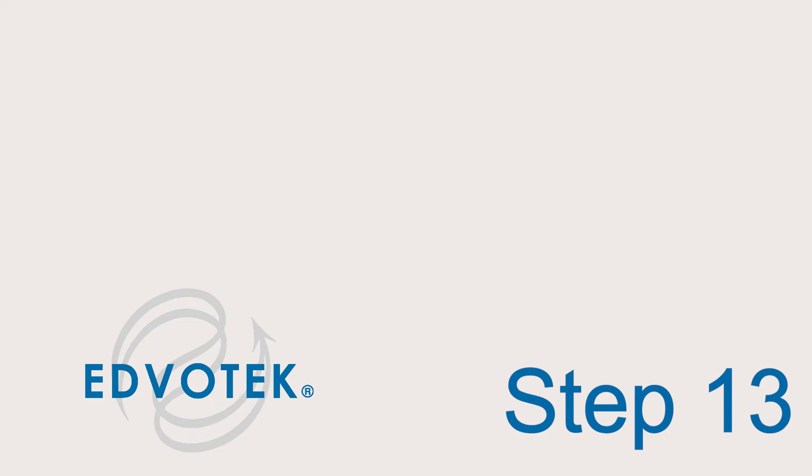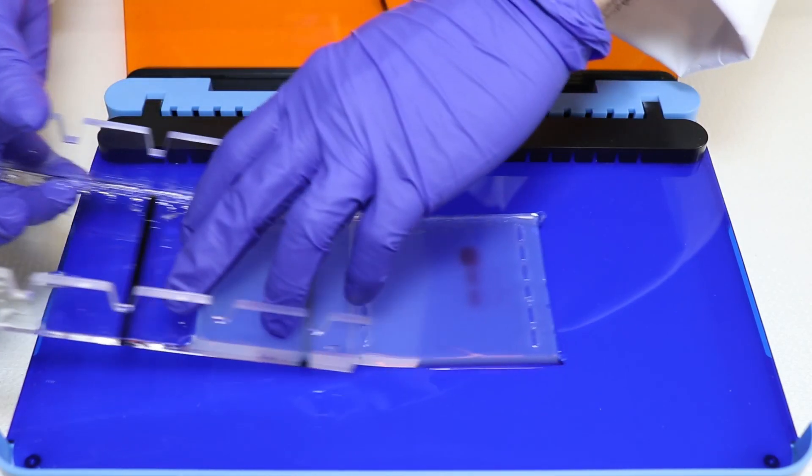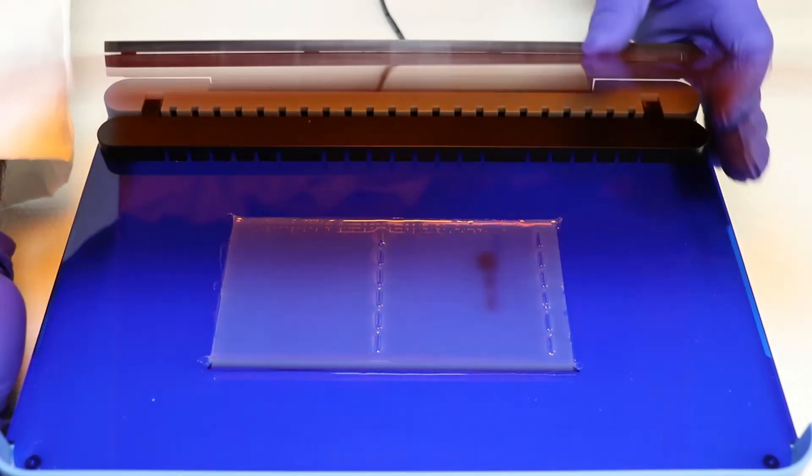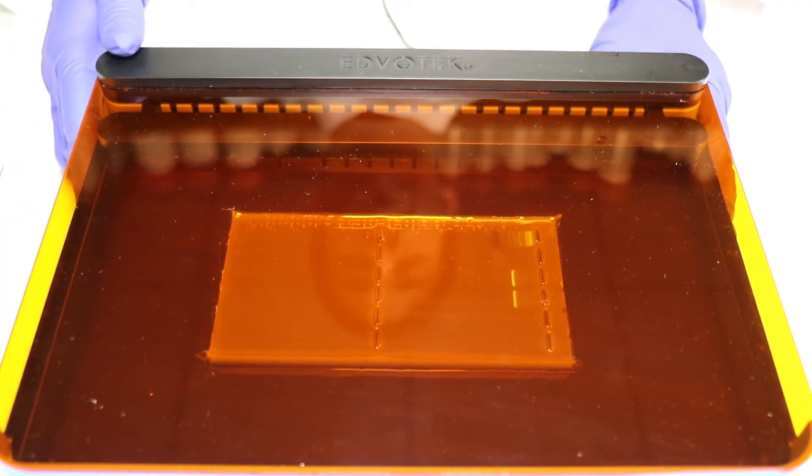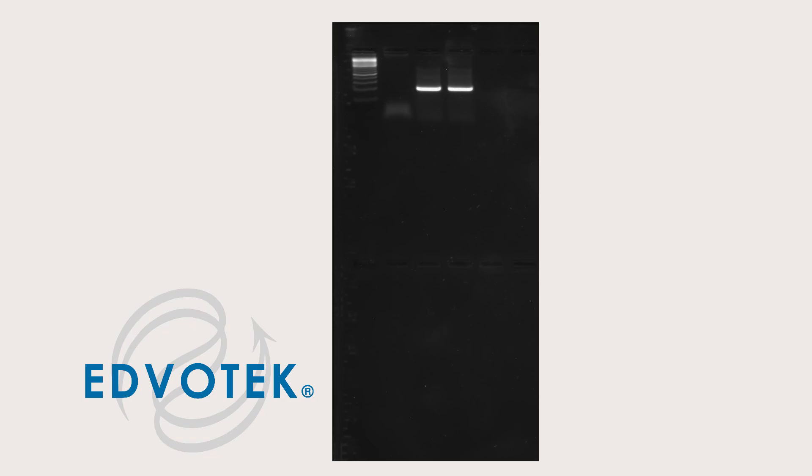Step 13: Slide the gel off the casting tray onto the viewing surface of a transilluminator and turn the light on. The DNA should appear as bright green bands on a dark background. Photograph the results for later analysis.